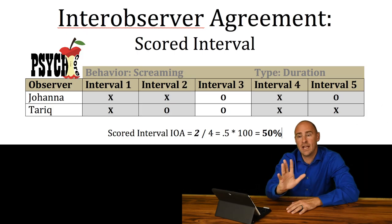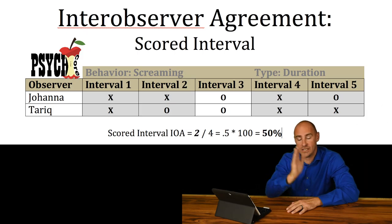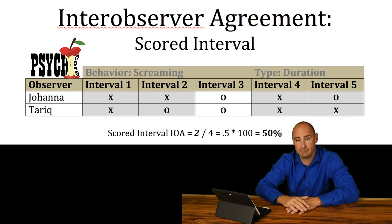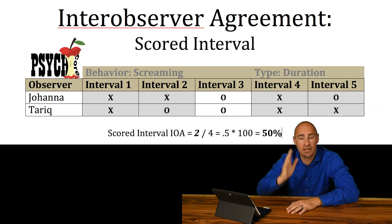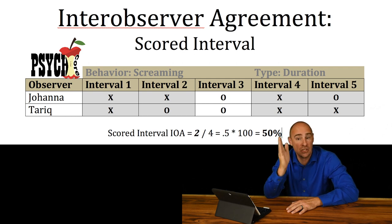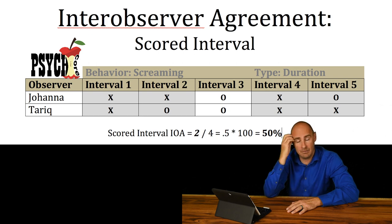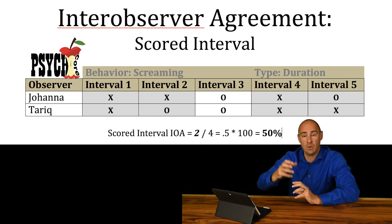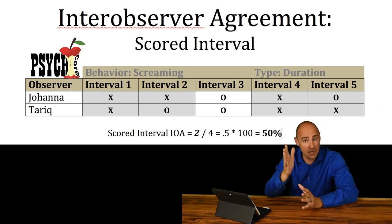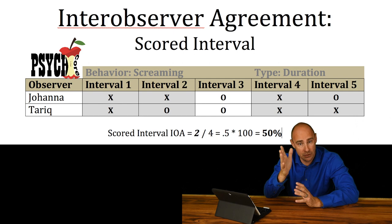We're only going to worry about intervals in which either observer saw behavior. If both observers did not see a behavior in a particular interval, we're going to ignore that. So we're only going to focus on the intervals where there was actually a score — where something was written down. And if one person saw it and one person didn't, that's okay. We'll use that interval.